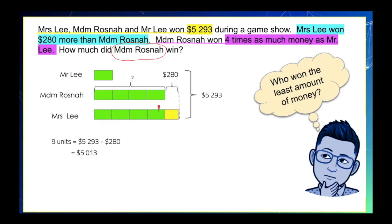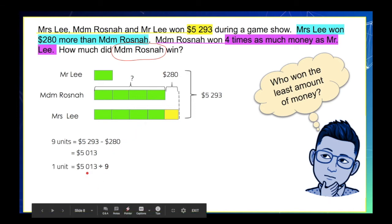Now, we can now find the amount of one unit. And to get that, we can just simply divide $5,013 divided by 9. And we will get this answer, $557. This amount actually represents Mr. Lee's winning.